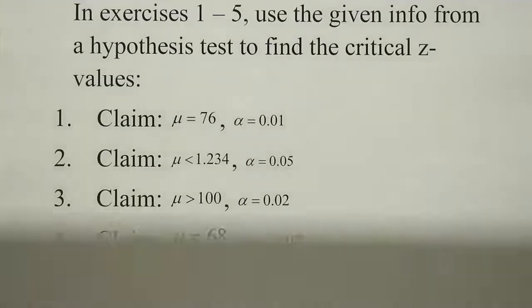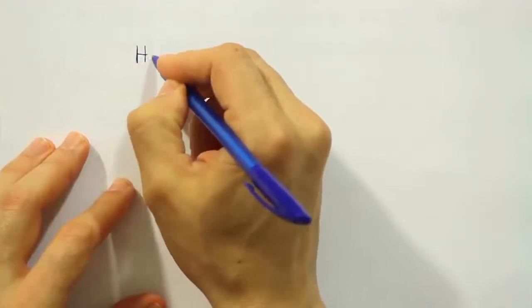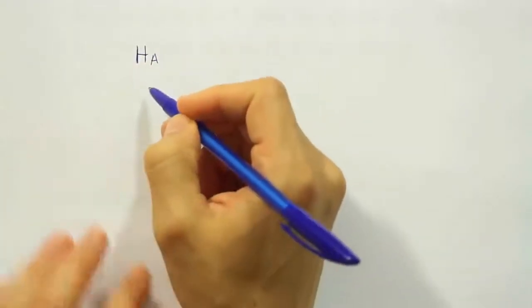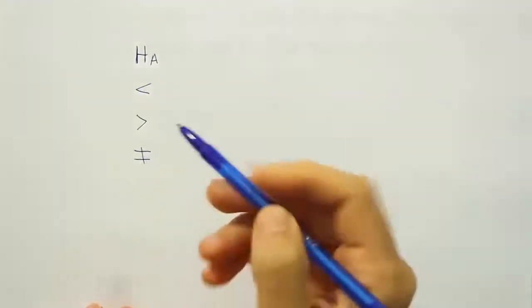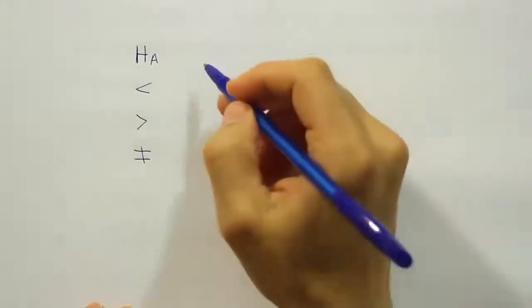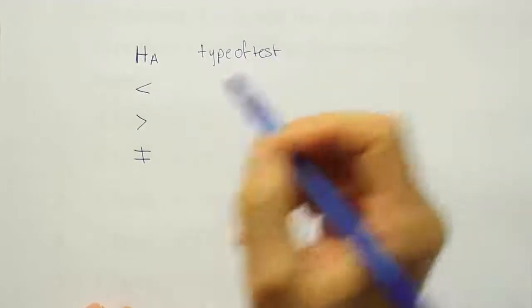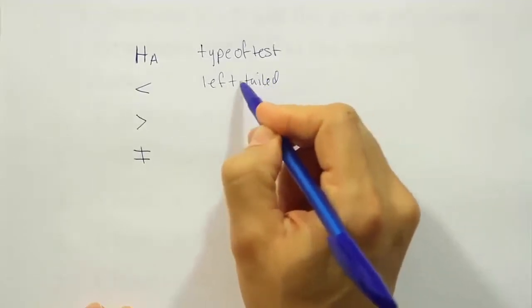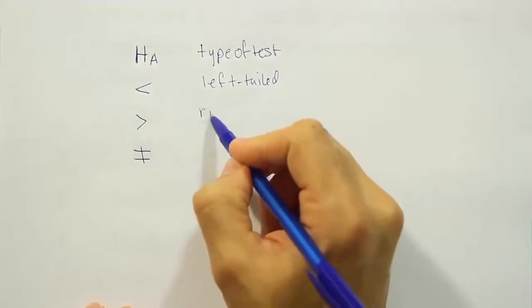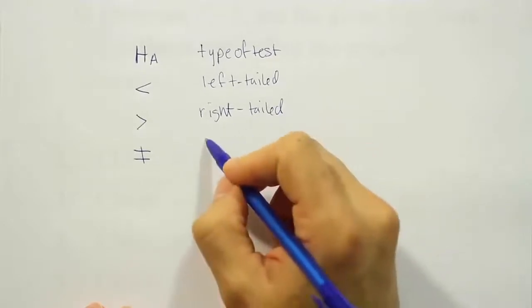Let's have a reminder of how we know when it's a left-tailed, right-tailed, or two-tailed test. We look at HA to determine the type of test, and HA will tell us by looking at its symbols. HA has three symbols: less than, greater than, or not equal to. Less than gives a left-tailed test, greater than gives a right-tailed test, and not equal to gives a two-tailed test.